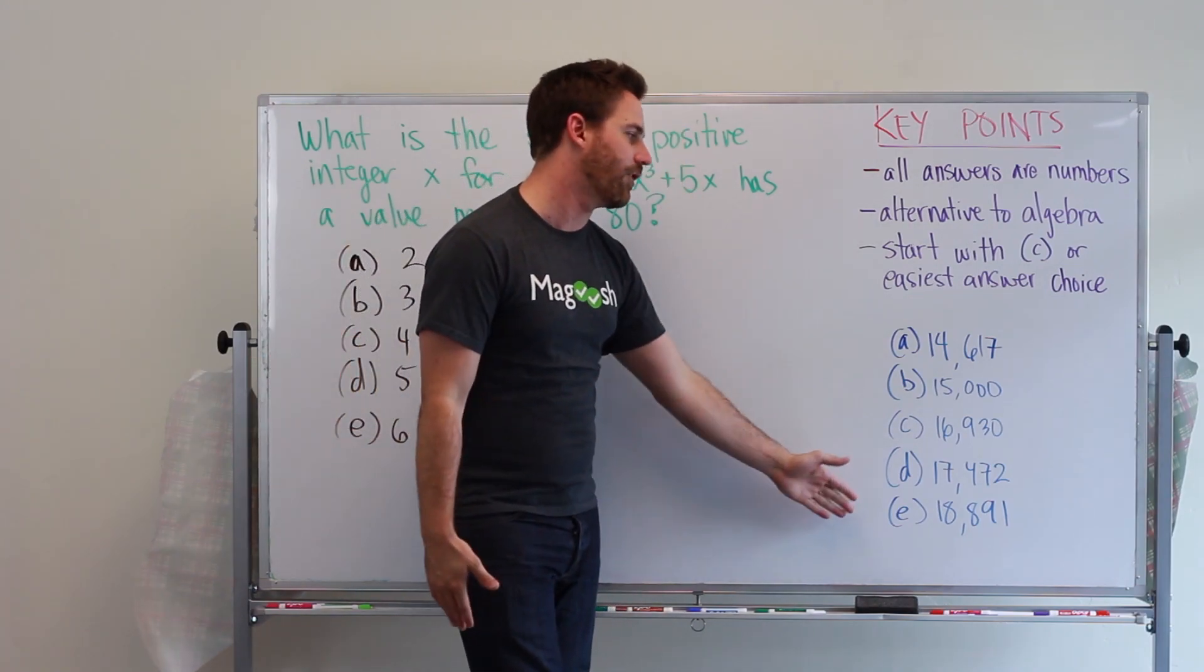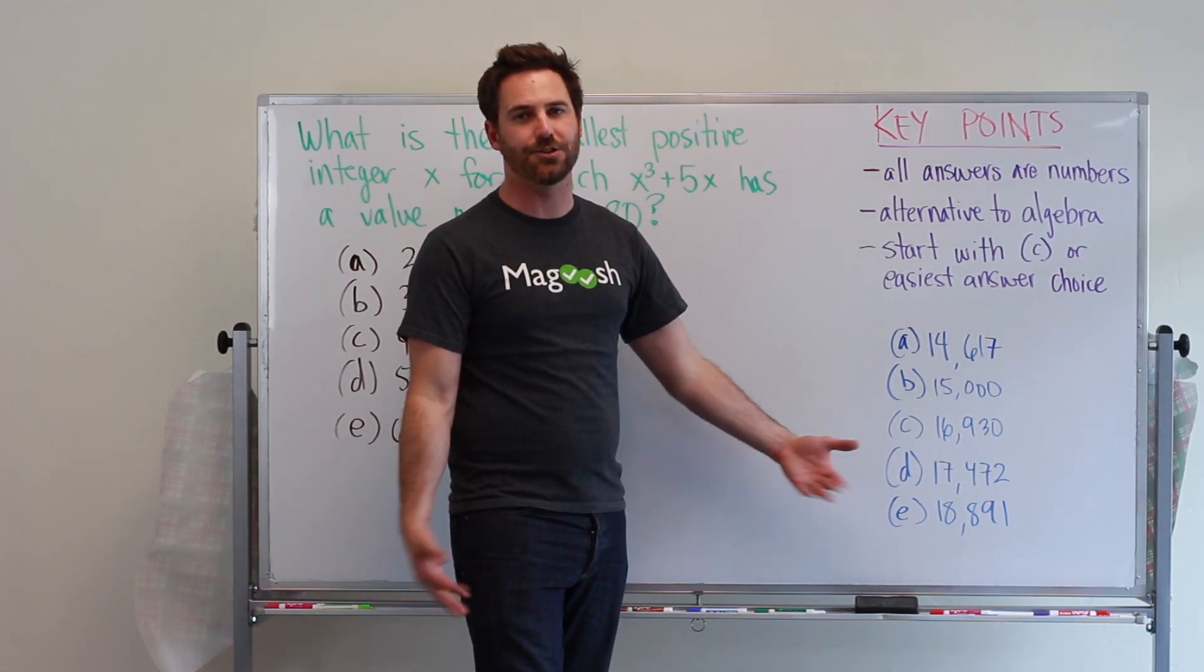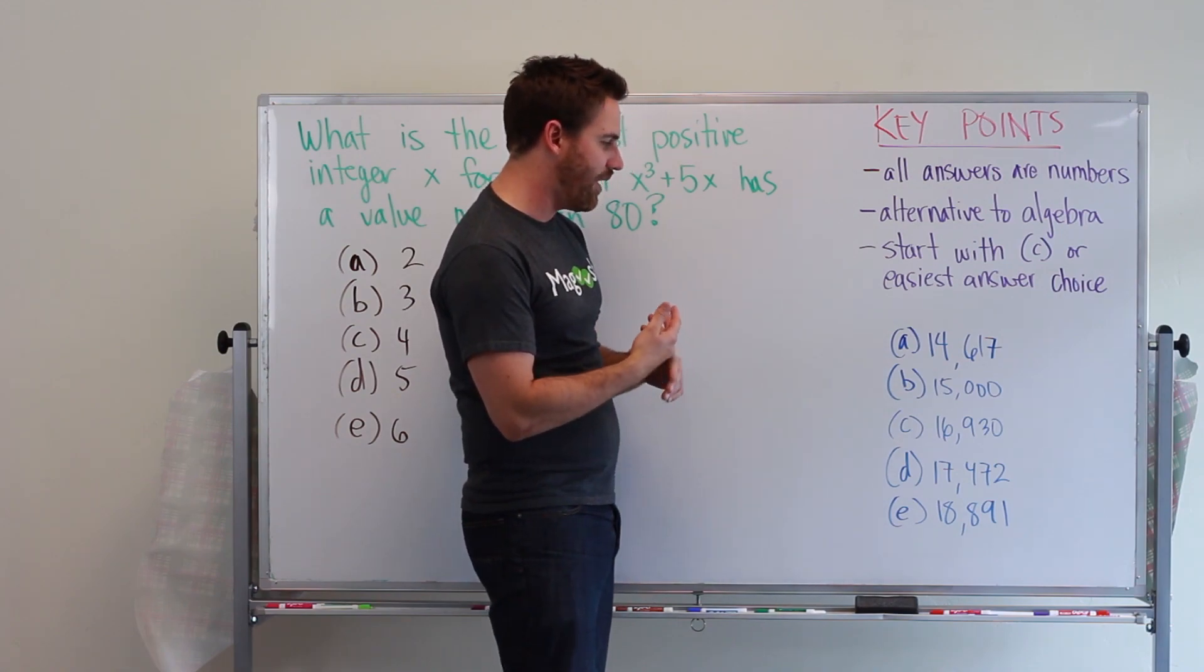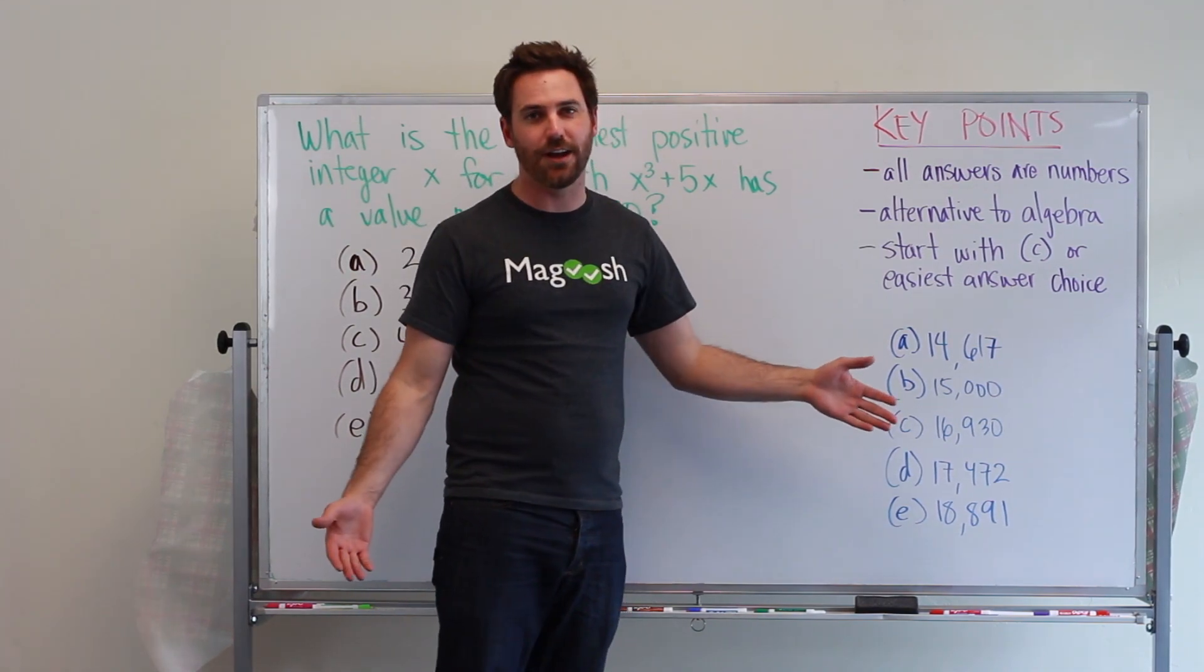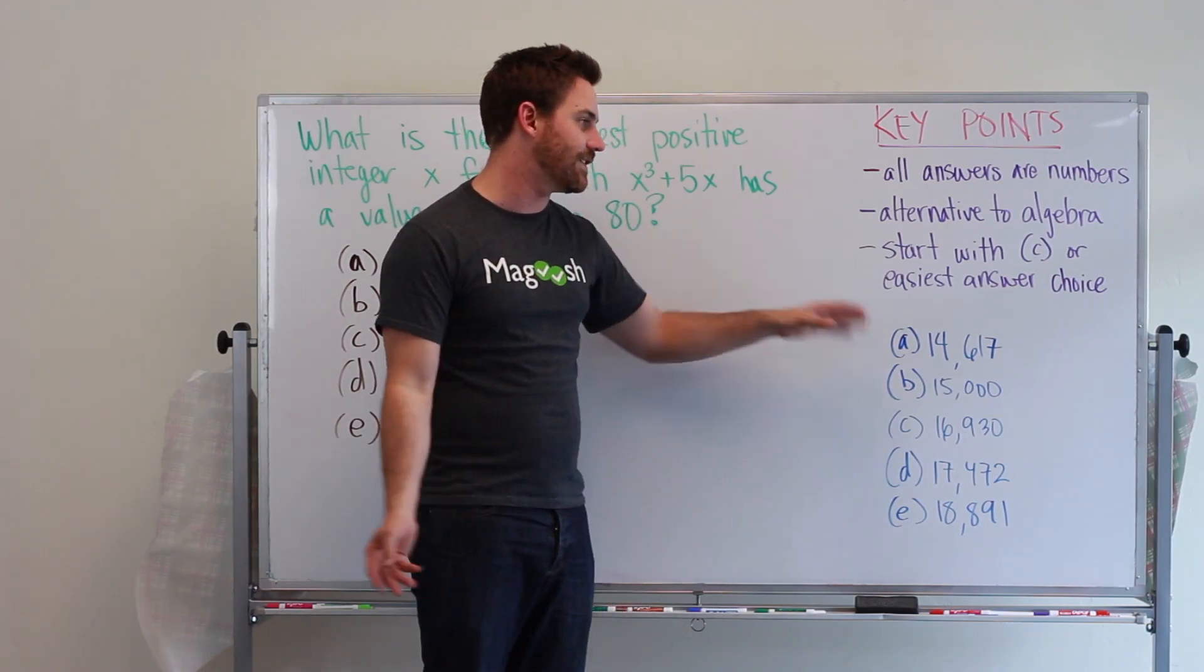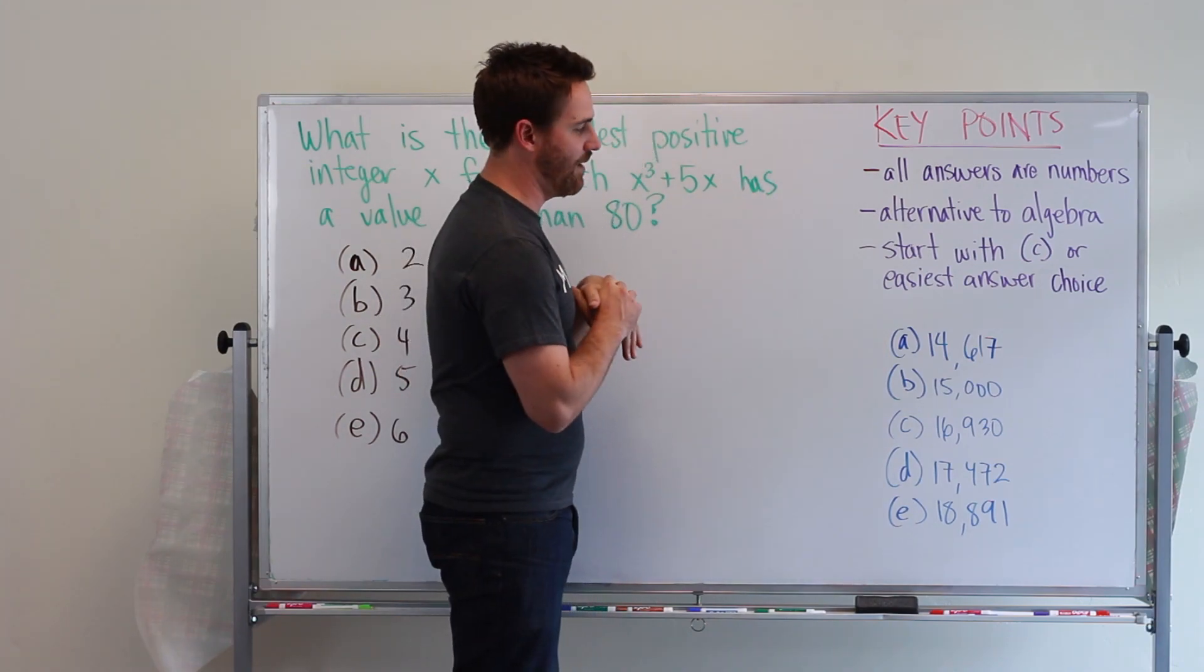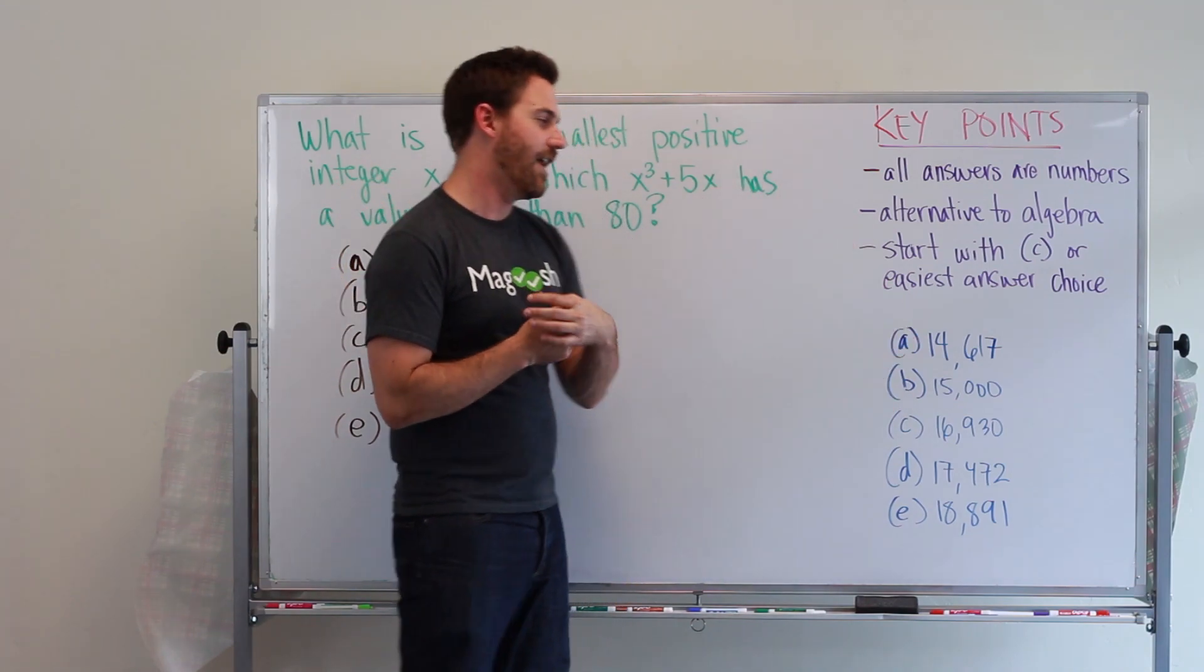So for example, if these were your answer choices here, you can see, one, they're all really close together, so I can't really estimate. And two, having to deal with these very tough numbers is going to be hard. But I can see B is a round number. It's nice. It's 15,000. It's very easy to deal with. So in this case, I would actually start with B just because all these other answer choices are going to take me a lot more time. So start with C, but start with your easiest answer choice, ultimately.